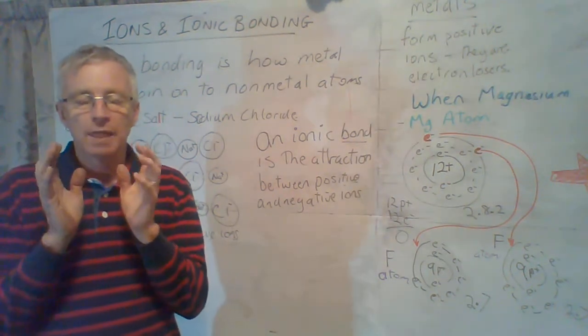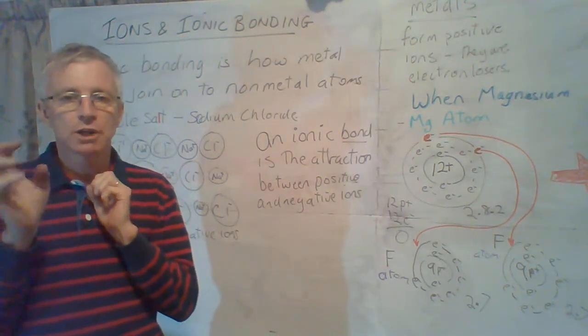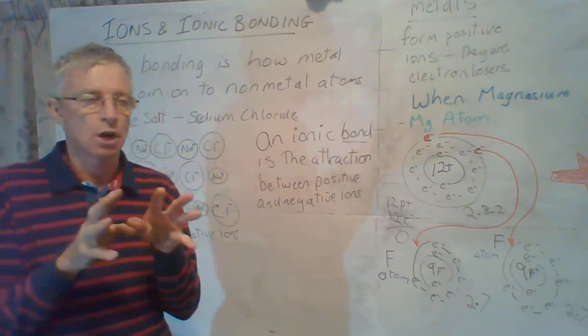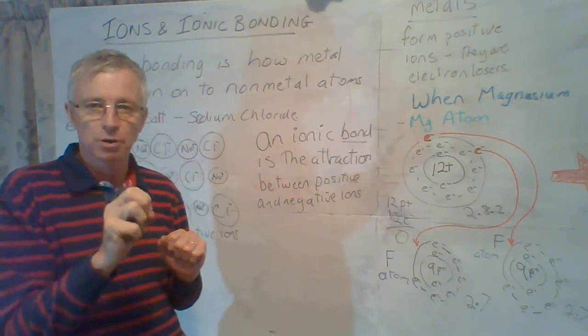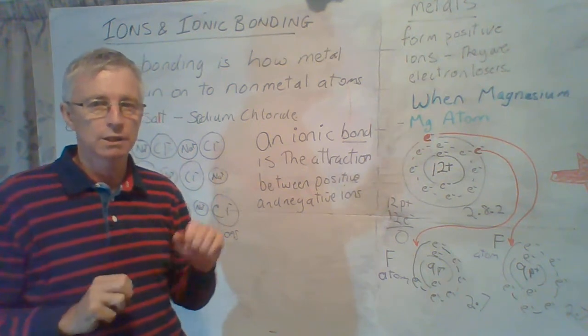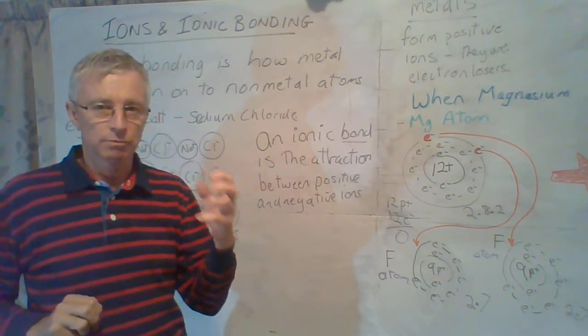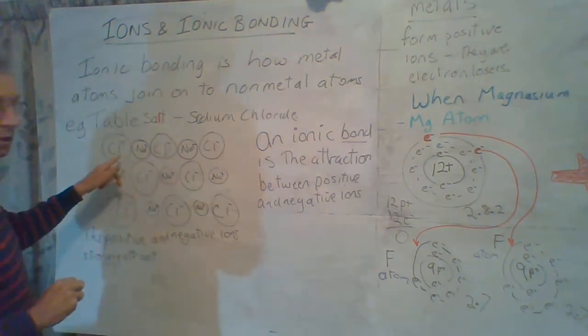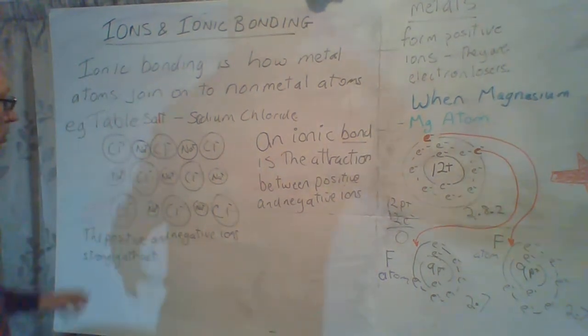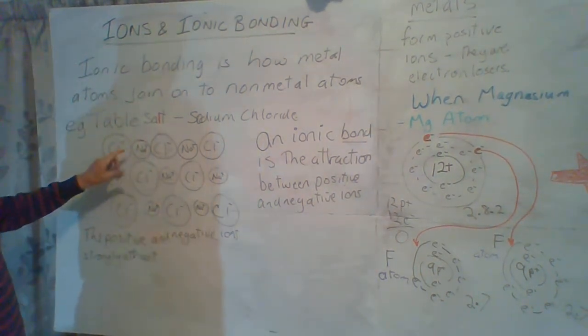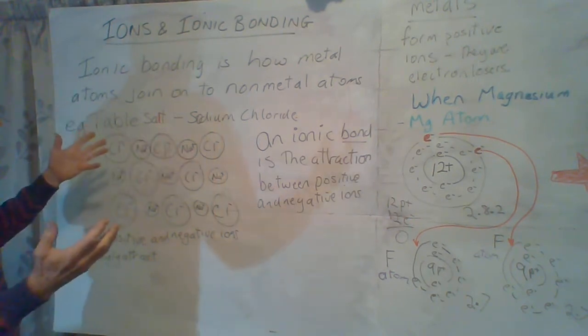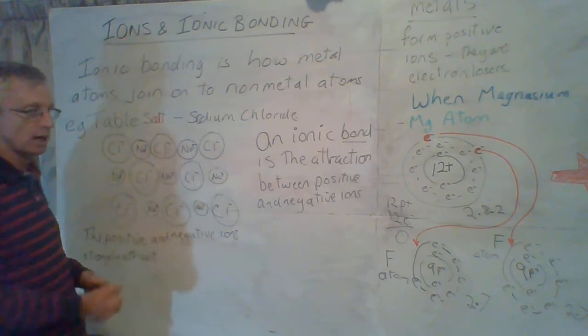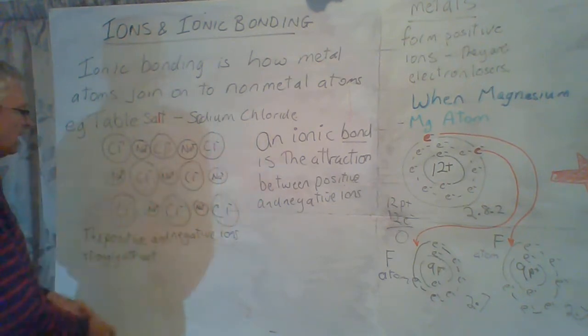And then when you join them together, the metal, the atoms change to ions. The sodium atoms and the chlorine atoms change to ions. Sodium turns into a positive ion. It has a positive electrical charge of plus one. And the chlorine has a negative charge of negative one.